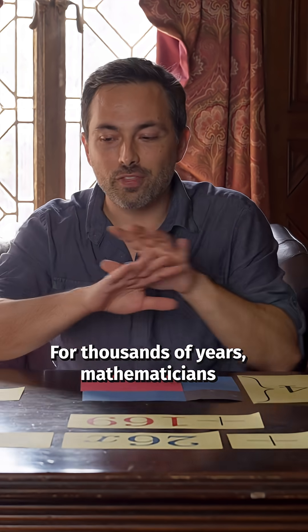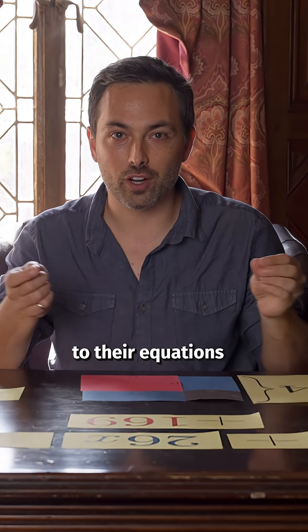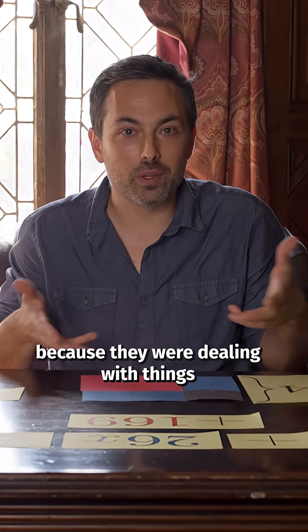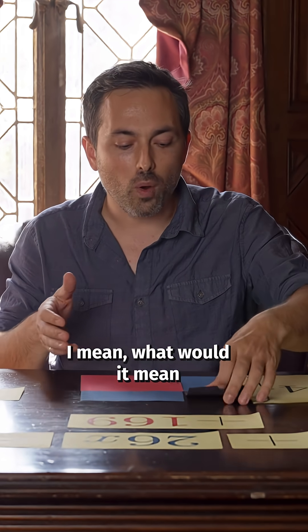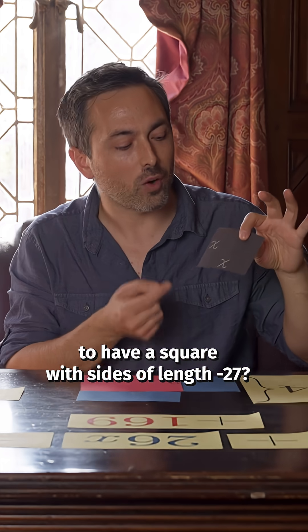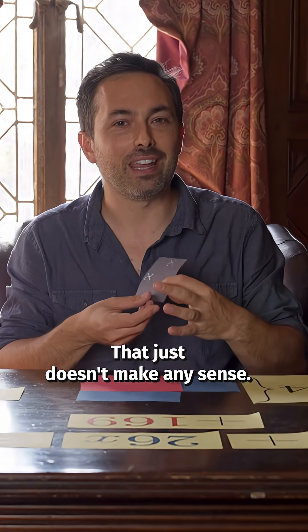For thousands of years, mathematicians were oblivious to the negative solutions to their equations because they were dealing with things in the real world, lengths and areas and volumes. I mean what would it mean to have a square with sides of length negative 27? That just doesn't make any sense.